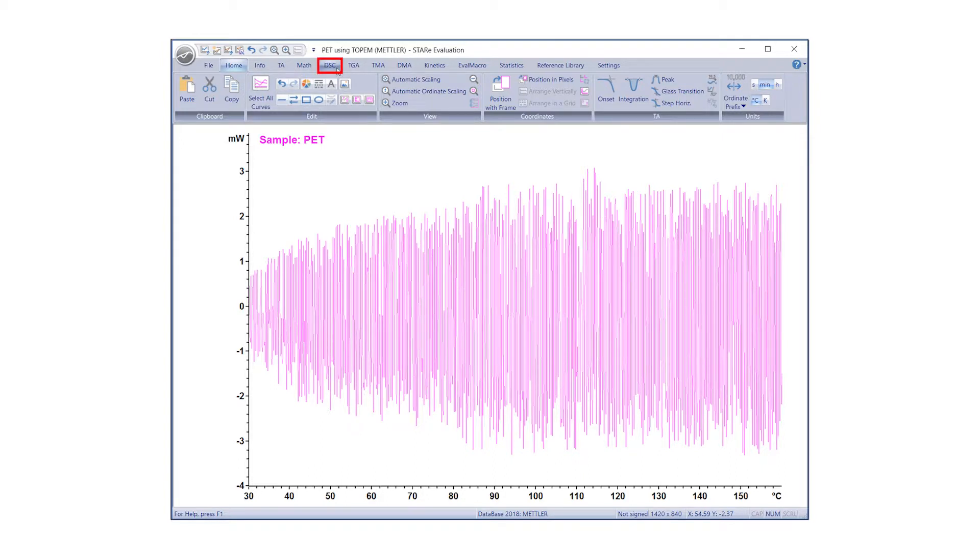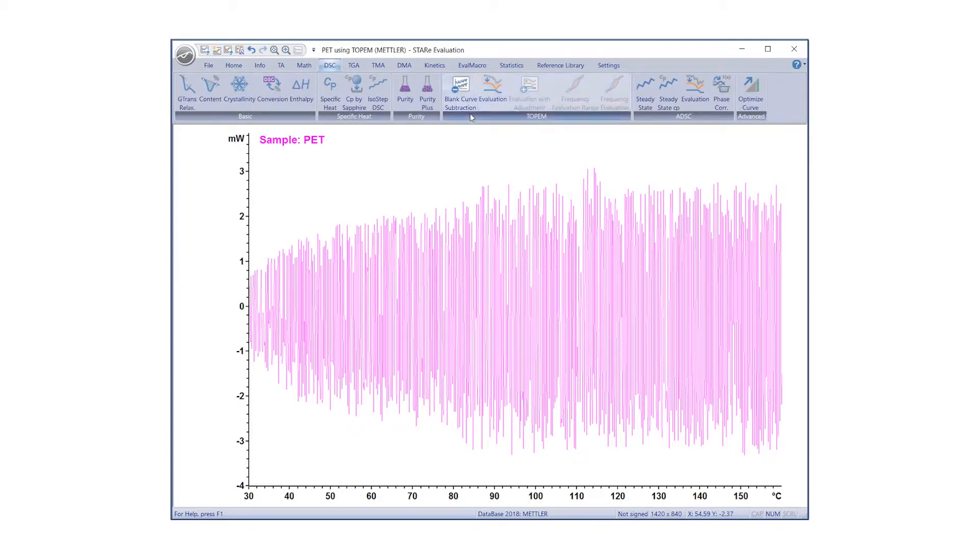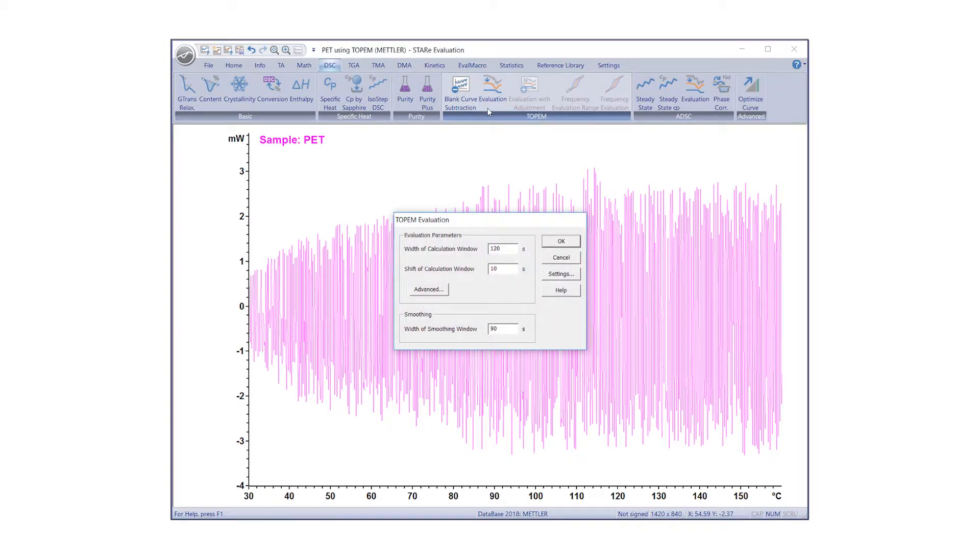Under the DSC tab, click the Topham evaluation icon and define the parameters that influence the calculation. These are both the width of the calculation window, shift of the calculation window, and width of the smoothing window.